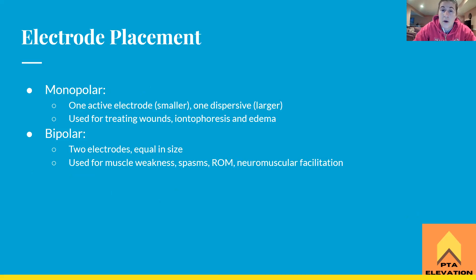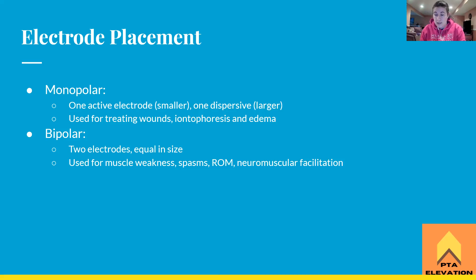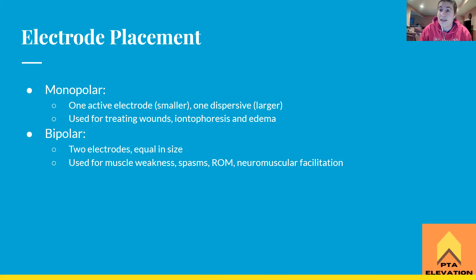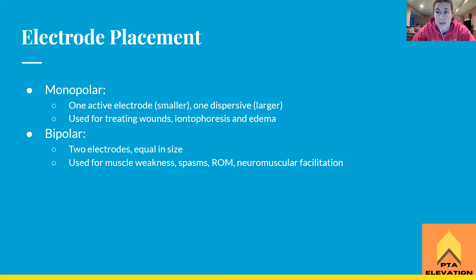Electrode placement: monopolar setup means only one active electrode — similar to iontophoresis, where one electrode is active and one is dispersive. The active electrode is smaller for high current density, and the dispersive electrode is large and set off to the side to ground the patient. You always need at least two electrodes to ground the patient. Monopolar is associated with iontophoresis, wound treatment, and edema management with high volt.